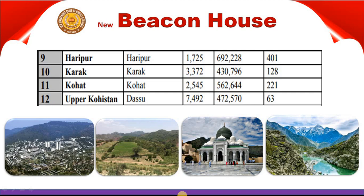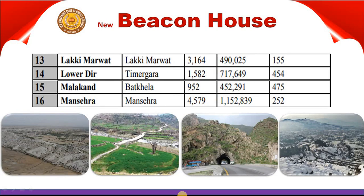The twelfth district is Upper Kohistan. Its headquarter is Dasu. It has an area of about 7,492 km². Its population according to 1998 is 472,570 and it has a density of 63 people per km². The thirteenth district is Lucky Marwat. Its headquarter is also in Lucky Marwat. Its area is about 3,164 km², its population is 490,025, and its density is 155 people per km².